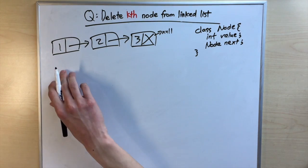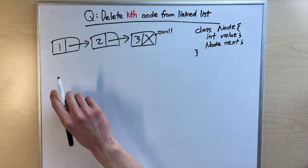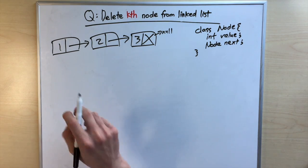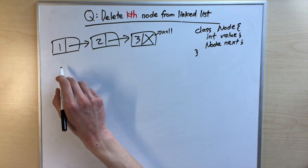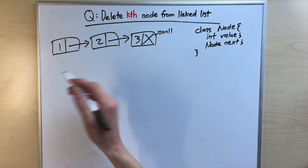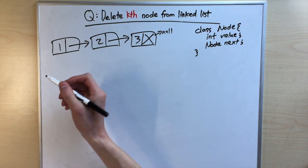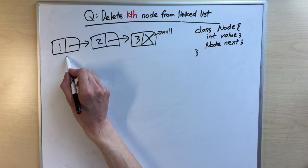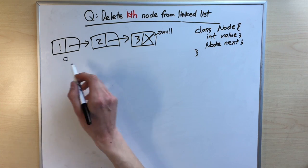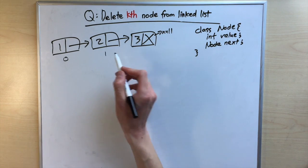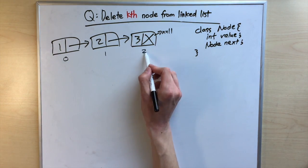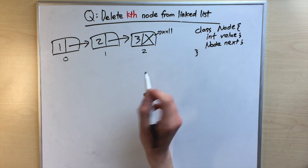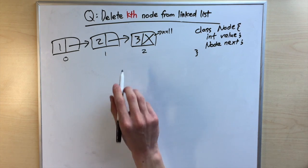In computer science, we typically index nodes in a sequence starting at zero. So in our linked list, the first node is at index zero, the second at index one, and the third at index two.